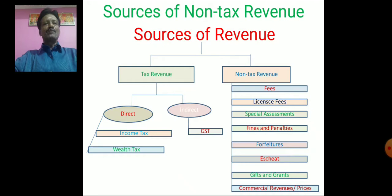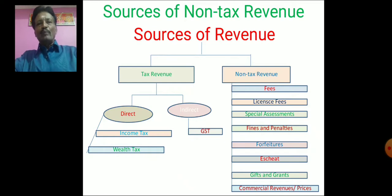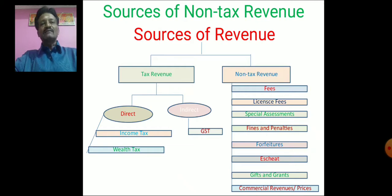Now we discuss what non-tax revenue means. Under non-tax revenue, the government provides many administrative services for the welfare of the people, and to maintain the expenses of those services, the government collects a nominal amount of money from the people. Those sources are called non-tax sources. The items under non-tax sources are: fees, license fees, special assessments, fines and penalties, forfeitures, estates, gifts and grants, and commercial revenue.